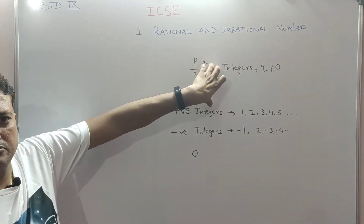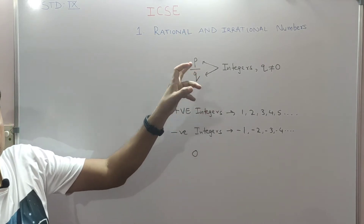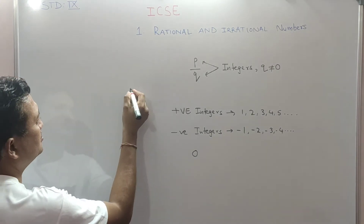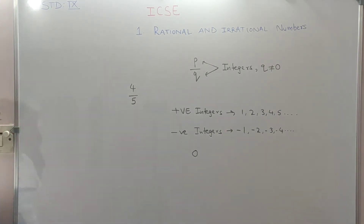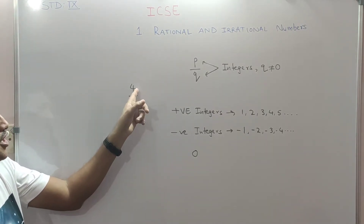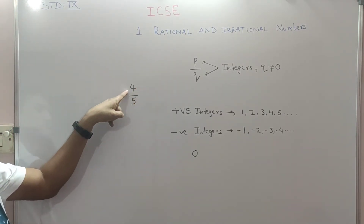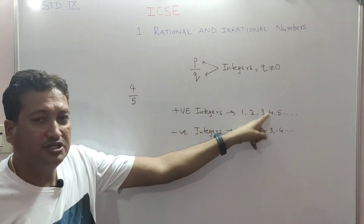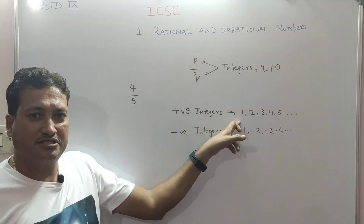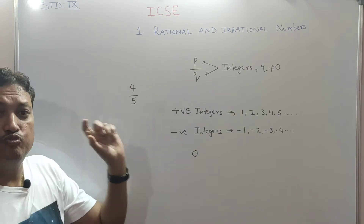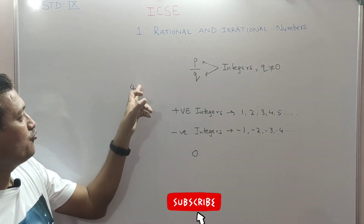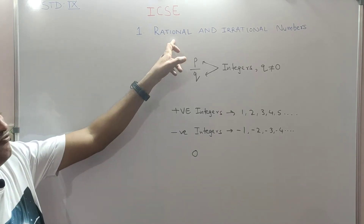We need to take a fraction where numerator and denominator both are integers. For example, 4 upon 5 — the numerator is 4, which is a positive integer, and the denominator is 5, also a positive integer. So numerator and denominator are both integers, and the denominator is not zero. Hence, 4 upon 5 is an example of a rational number.